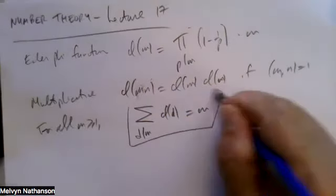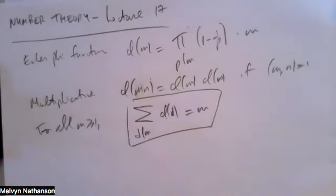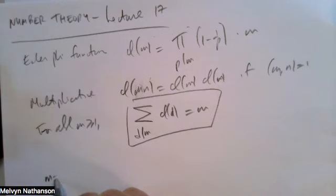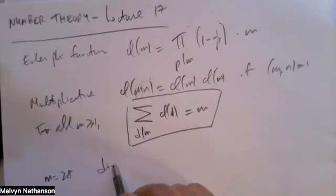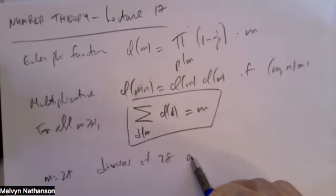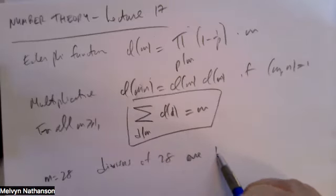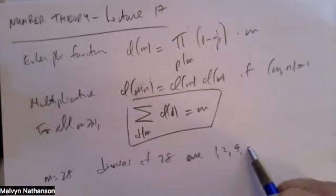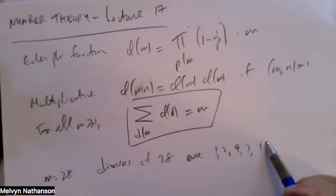So this is really a fascinating result. Let me just work out one more example of it. Take m equal to 28. What are the divisors of 28? They are 1, 2, 4, 7, 14, and 28.